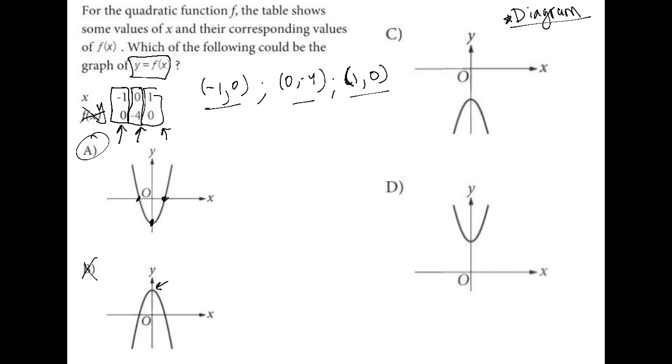Choice C looks like it may have this 0, negative 4 value but it does not have any x intercepts. It does not have this x intercept and that x intercept. So C is out.